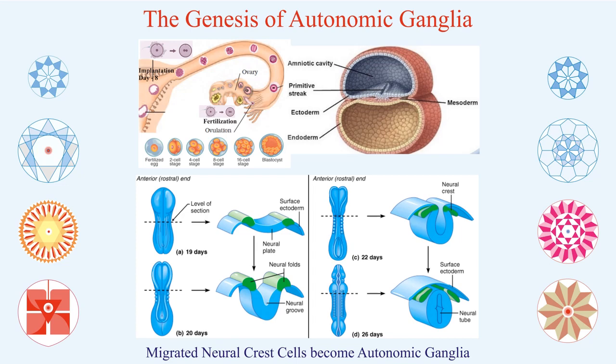Whether it is the sympathetic or parasympathetic system, and also the adrenal medulla, these are formed from migrated neural crest cells surrounded by three layers of adrenal cortex. I am sure this embryology — the genesis of the autonomic ganglia — is very important to understand the functions and anatomy of the autonomic nervous system as we proceed further.